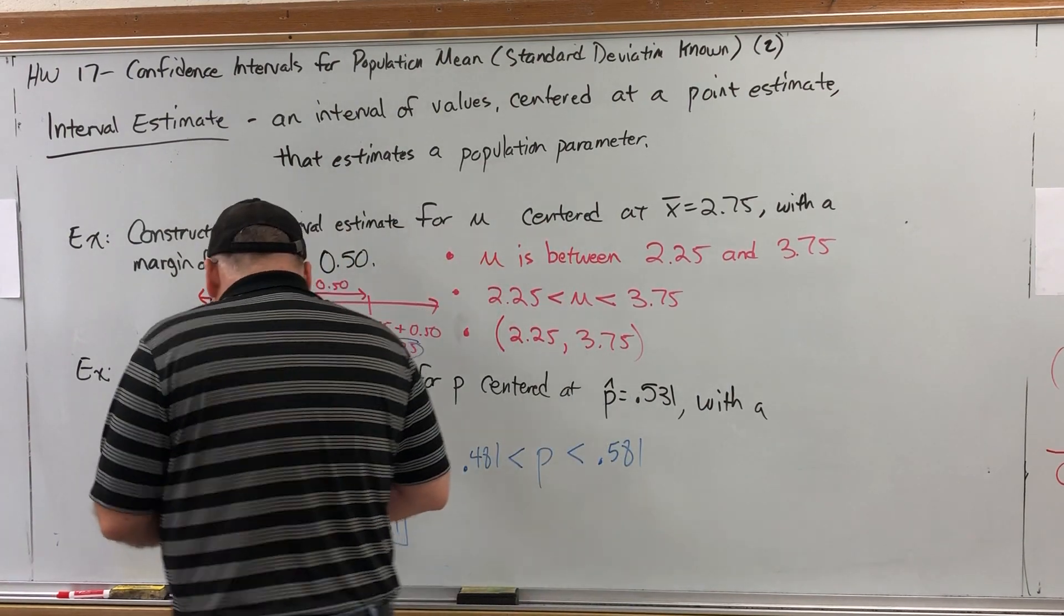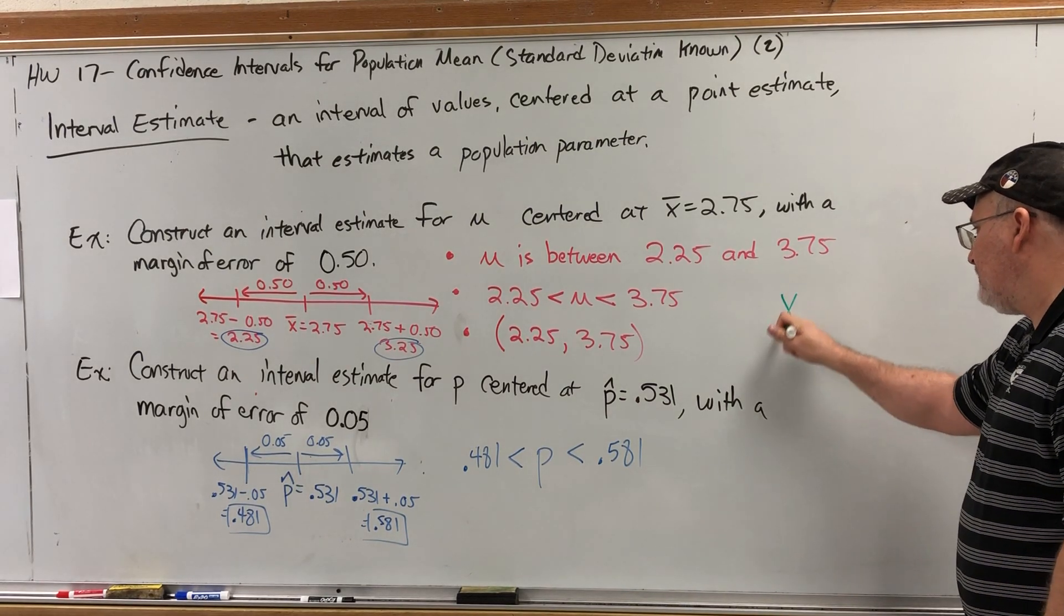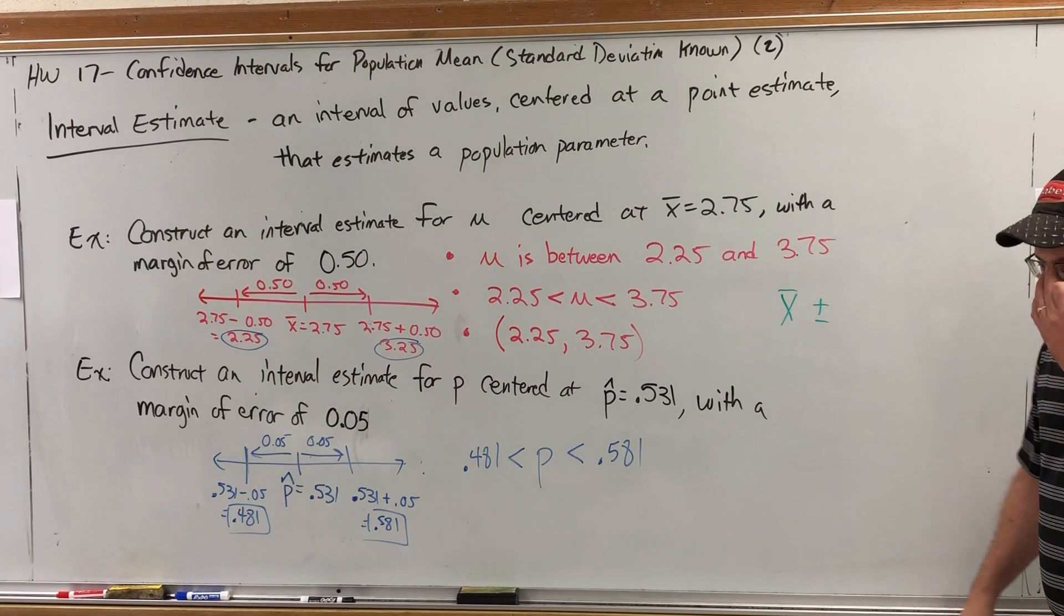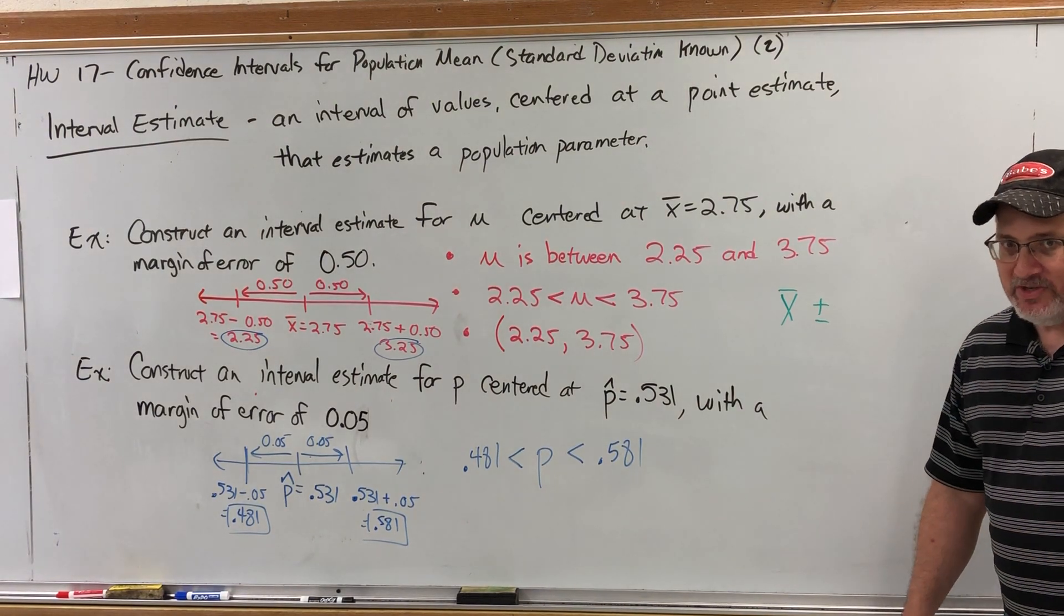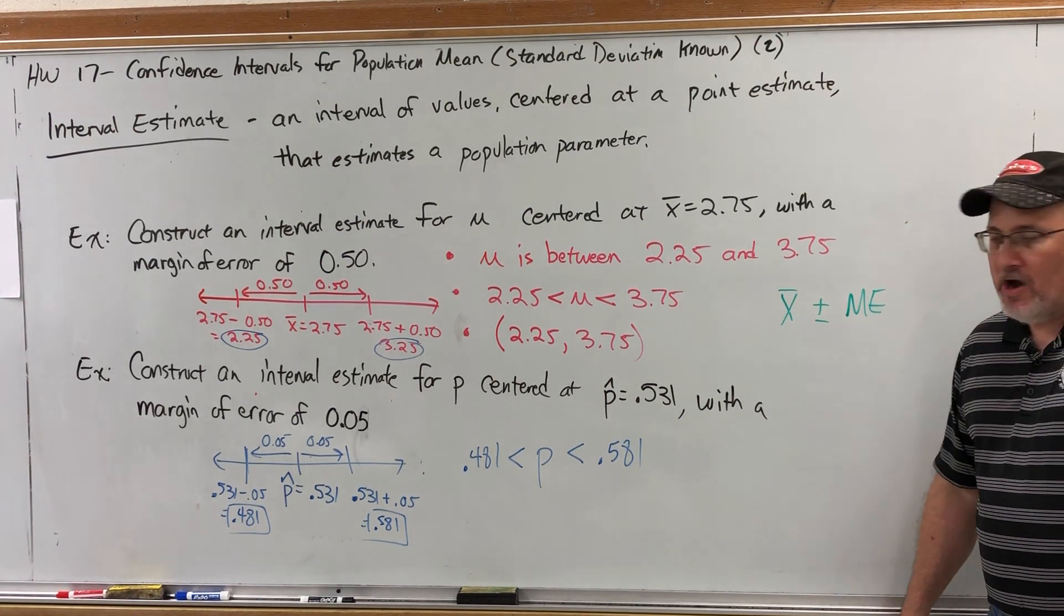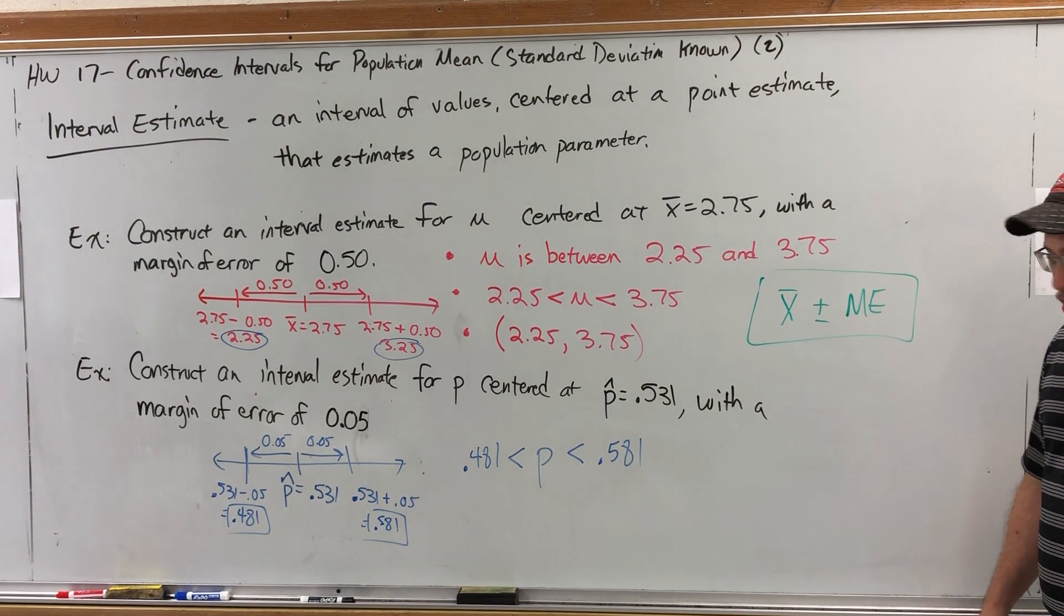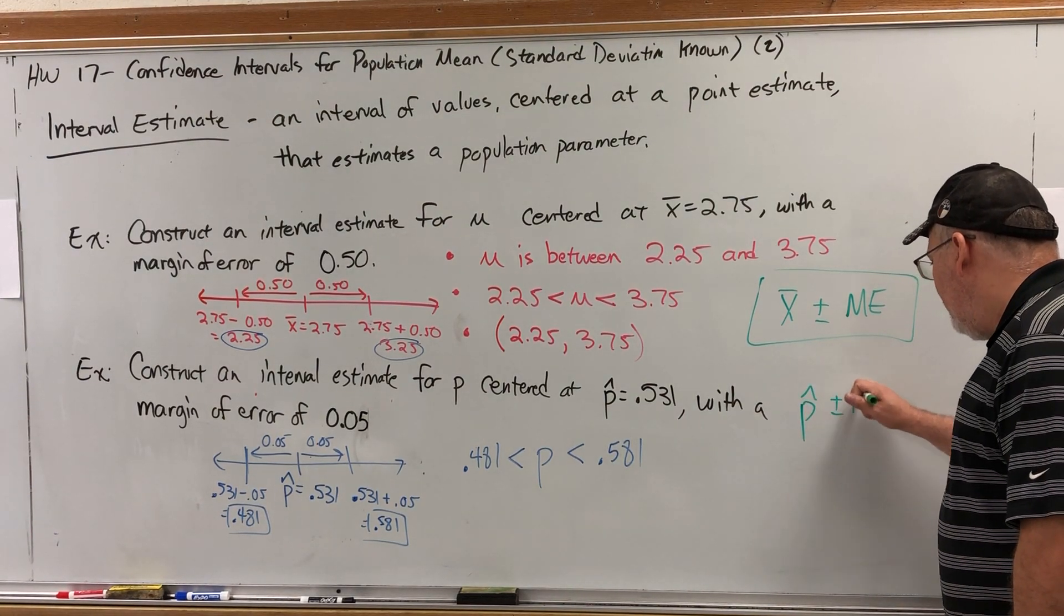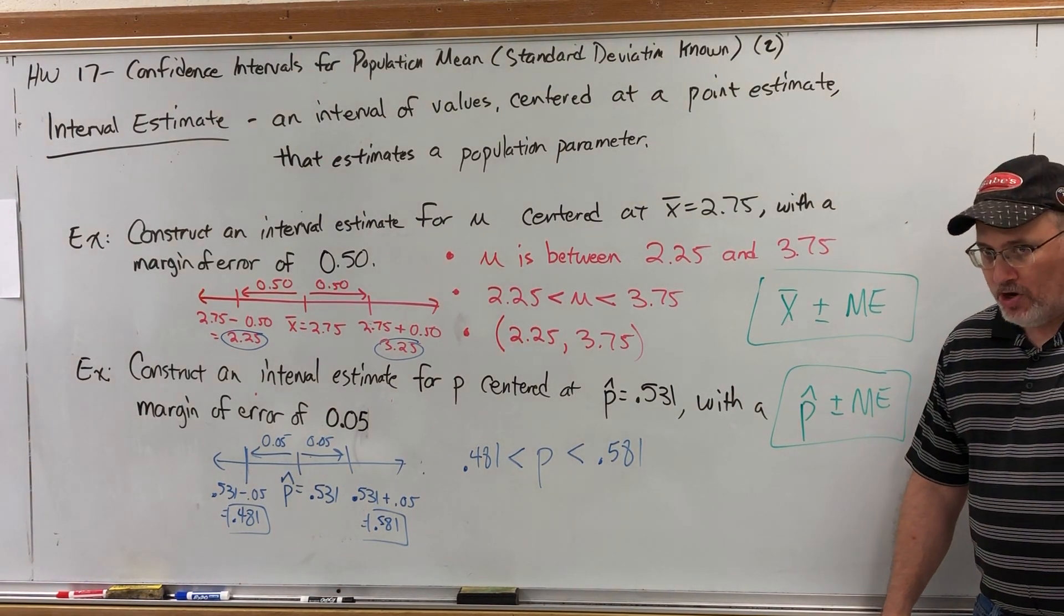If you wanted to write these generically, we could say that we built this first interval by taking x bar and adding or subtracting the margin of error. In some books, the margin of error is represented with lowercase m, but I prefer to put capital ME for margin of error. So we can describe what we did by saying x bar plus or minus the margin of error. We could do the same thing for p-hat plus or minus the margin of error.